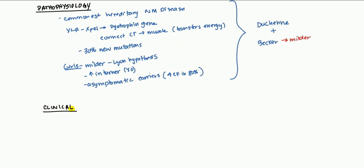In the first year, everything will be pretty much normal. They'll have normal or maybe slightly delayed milestones, but it's very slight. You will have normal walking at about 12 months. However, there may be some hip girdle weakness.